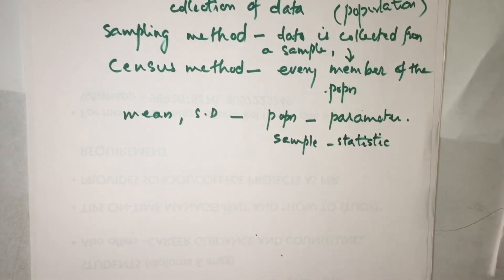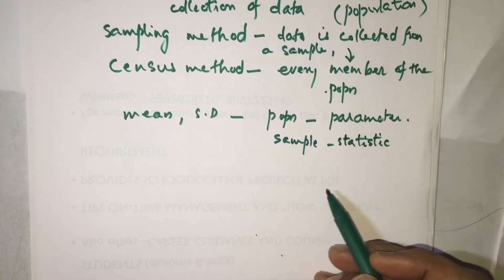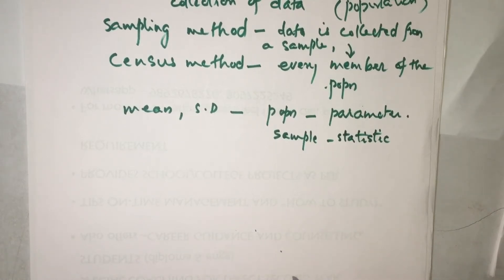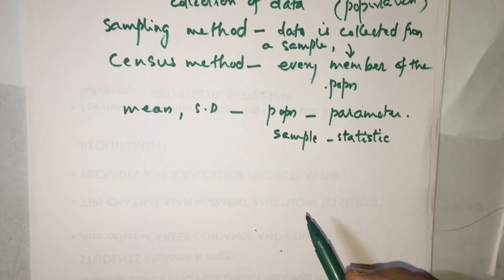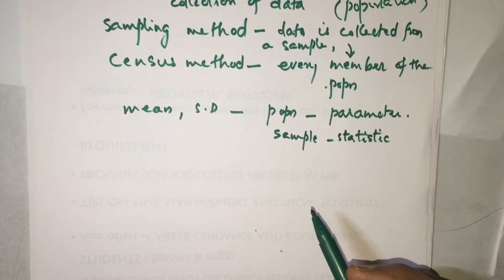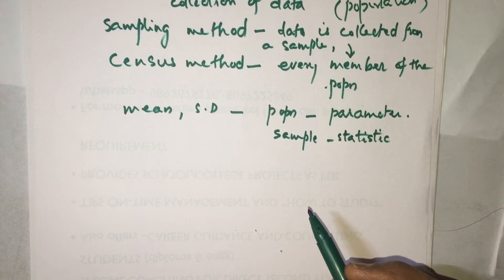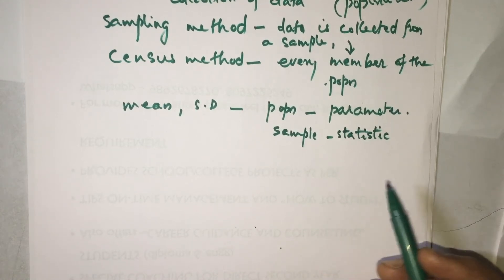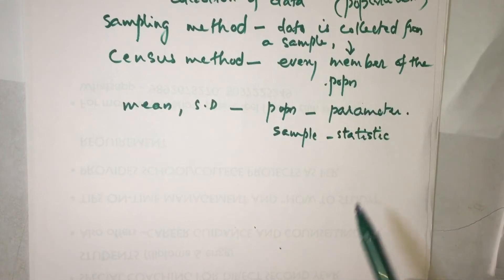In general, since the population is very large, we use the sampling method and obtain a sample, then calculate a statistic from it, and then estimate the parameter.